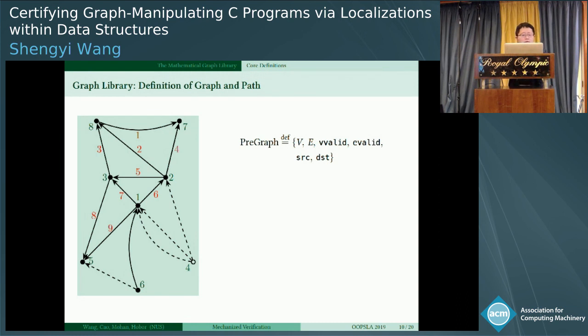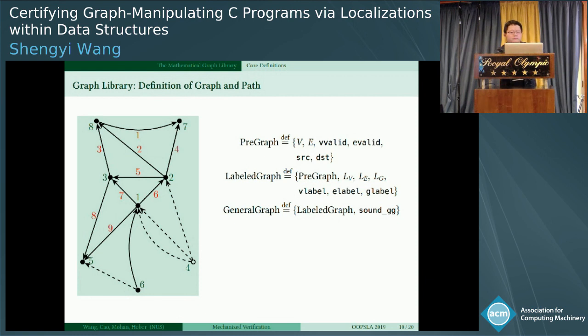Sometimes graph algorithms need to handle the labels attached to the vertices and edges. So we define labeled graph based on the definition of pregraph. We provide the label function for vertex, label function for edge, label function for the global graph. So if lv, le, lg are types for all the labels, all these v, e, lv, le, lg can be customized by users according to different concrete applications. This is still not enough. Because for example in our union-find algorithm, this graph is very special. It contains one and only one out-edge for each node. So we define general graph based on the labeled graph. We put a soundness condition to contain all arbitrary complex conditions we need for different applications.